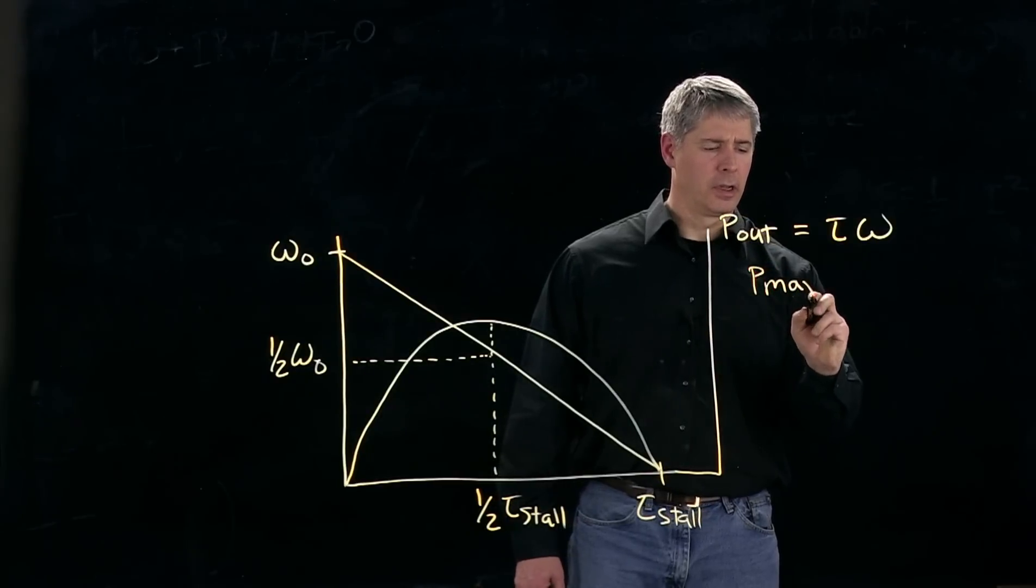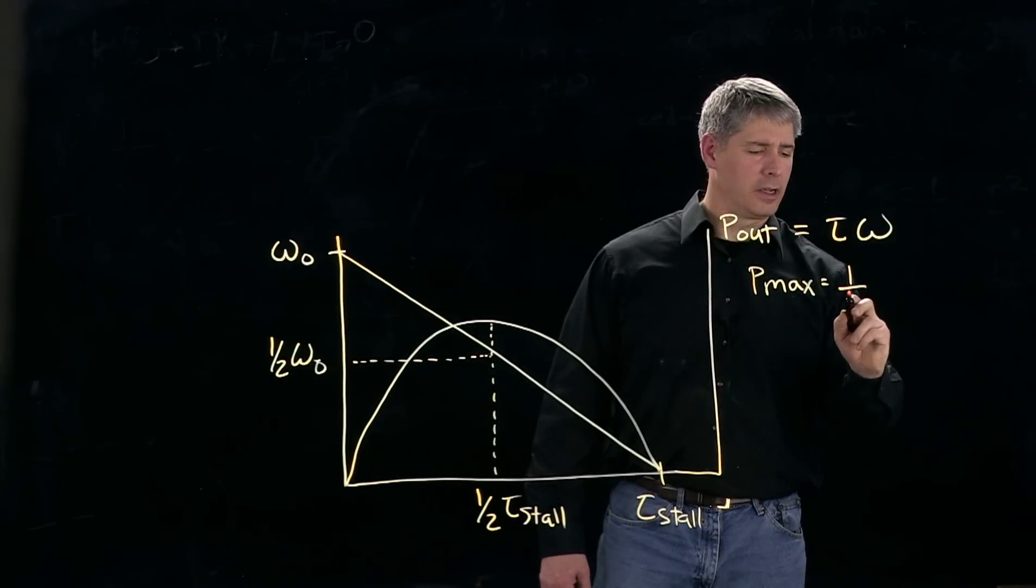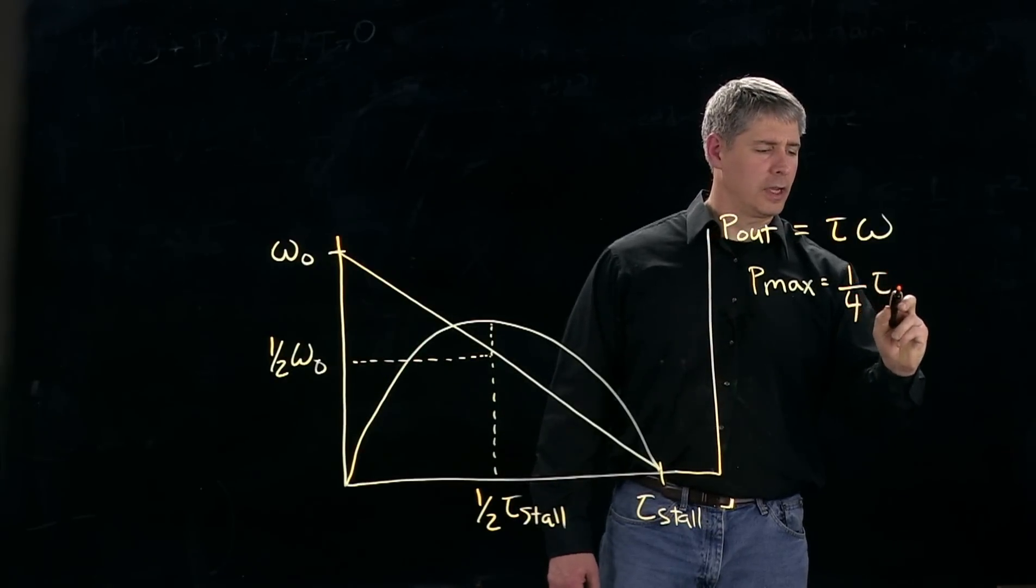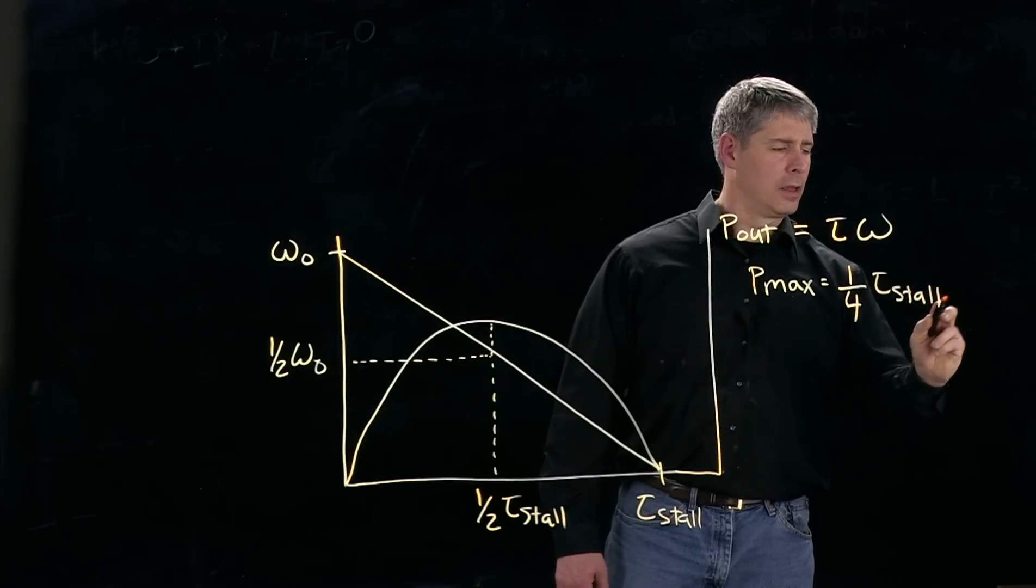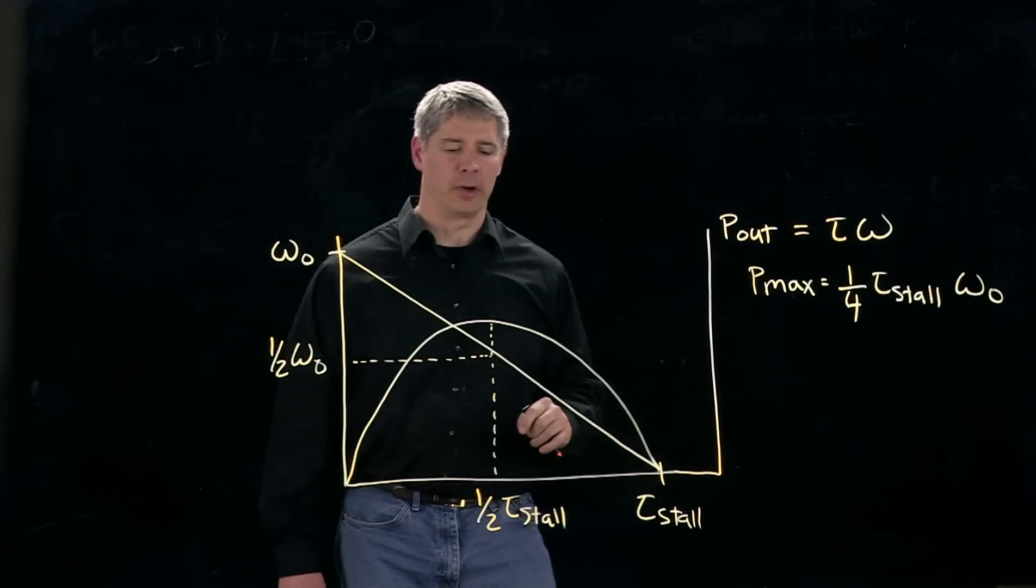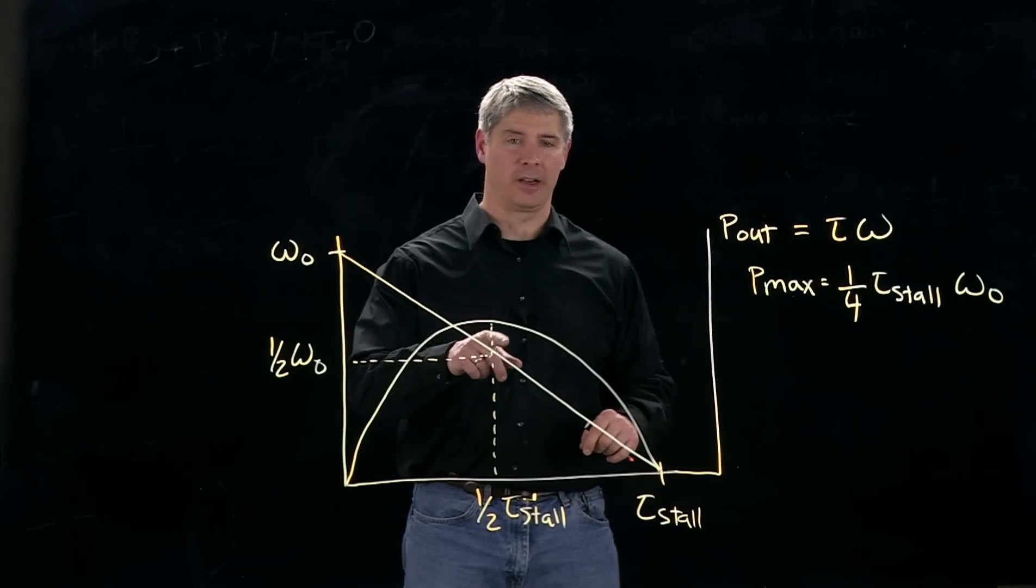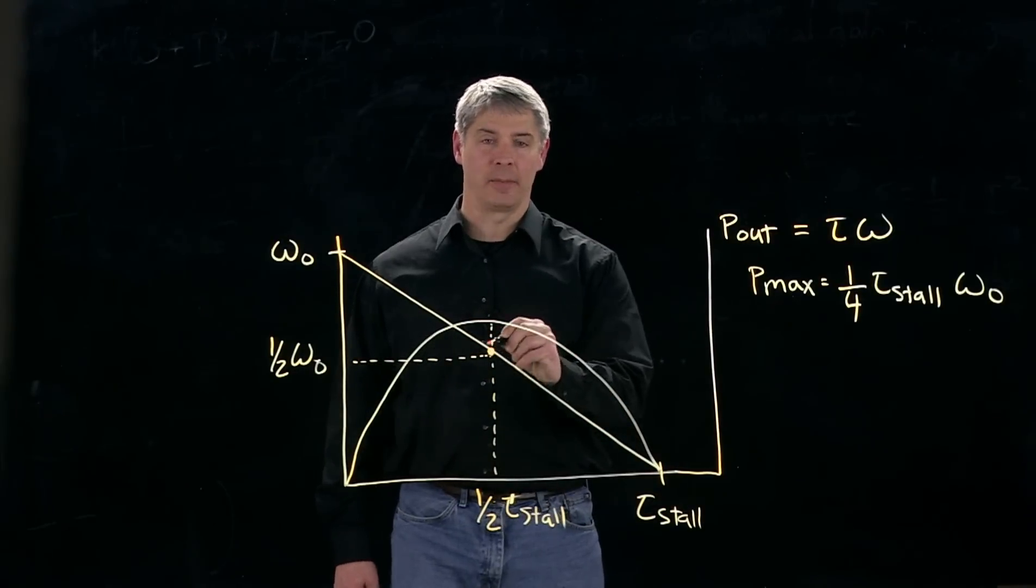So the maximum output power that we can get out of our motor is, if we multiply those two together, one quarter tau stall times omega naught. So that's the maximum output power we can get from our motor. Oftentimes it's in the intermittent operating region, so we can't always operate at that point.